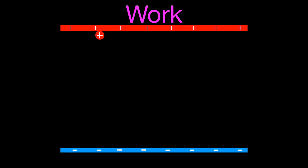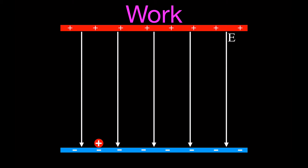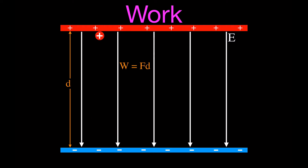We're going to first talk about work. We have a positively charged plate, a negatively charged plate, and a positively charged particle being held near the positive plate. Because it would be repelled by the positively charged plate, we're going to release that particle and it will move down towards the negatively charged plate, moving along the electric field. If I want to move that particle back to the positively charged plate, I would have to apply an external force over some distance, and when a force is applied over a distance, work is done.